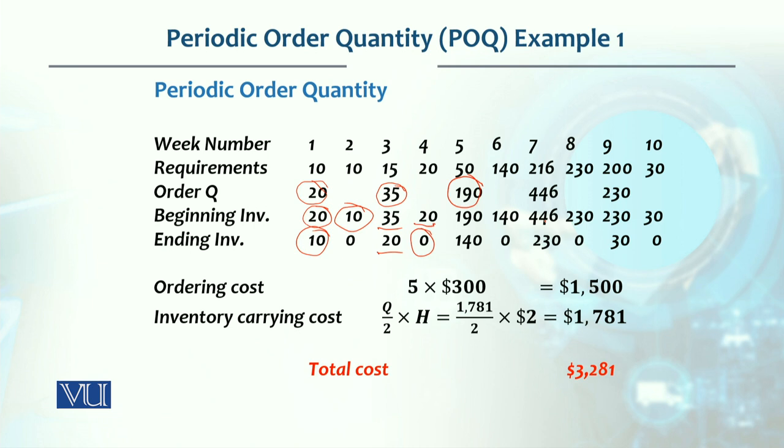If we calculate everything for these 10 weeks, we have 5 orders. Five orders multiplied by $300 per order gives us $1,500 ordering cost for this planning horizon.